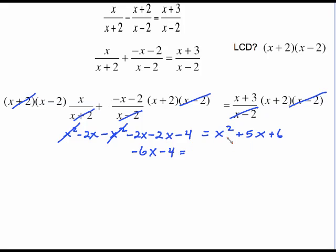Now because we have an x squared in the problem to solve this we need to have everything on one side equal to zero. So I need to add 6x and add 4 to both sides. This over here cancels which gives me zero. This is x squared plus 11x plus 10.